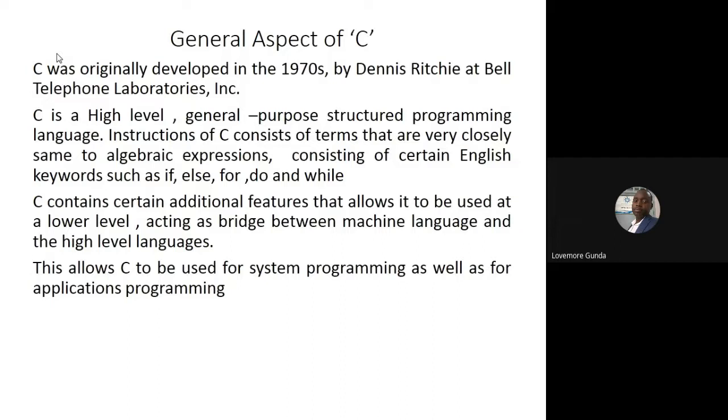C has additional features so that it can be used at a lower level. In other words, you can program maybe your PICs microcontrollers using C. It has features which allow it to act between machine language and the high level languages. Because of those features, you can use C for system programming and also for applications programming.